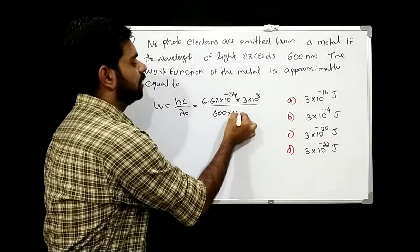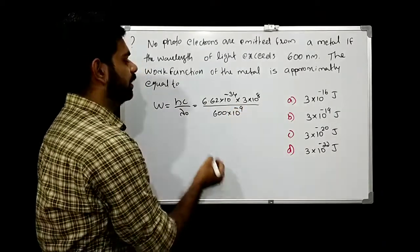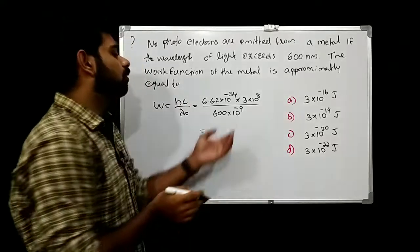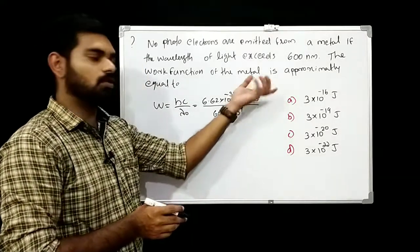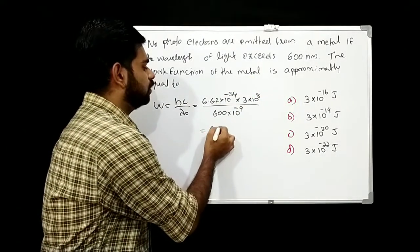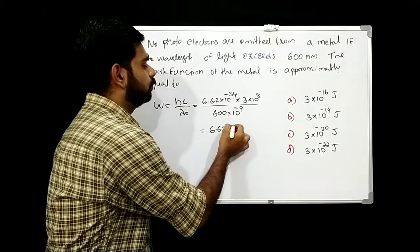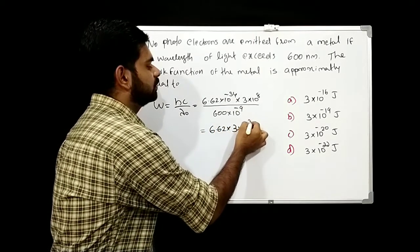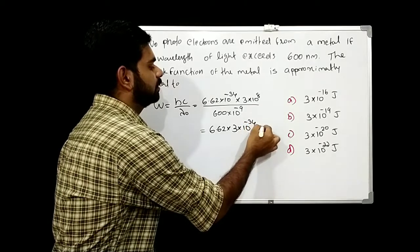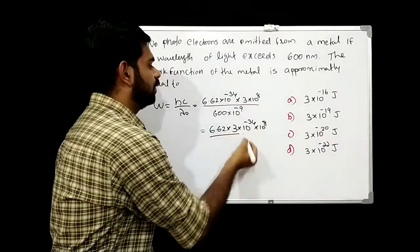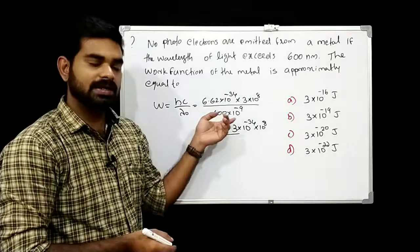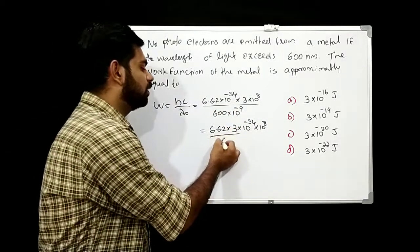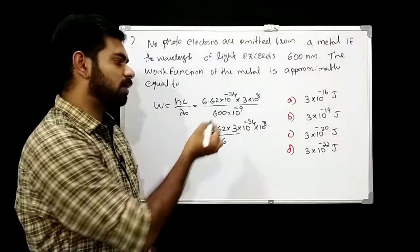Converting 600 nm to meters gives 600×10⁻⁹ m = 6×10⁻⁷ m. So W = (6.62×10⁻³⁴ × 3×10⁸) / (6×10⁻⁷), giving approximately 3.3×10⁻¹⁹ joules.